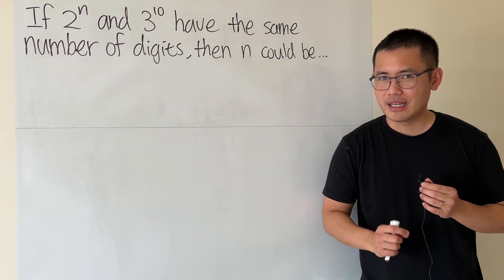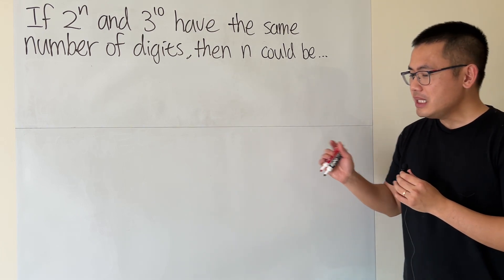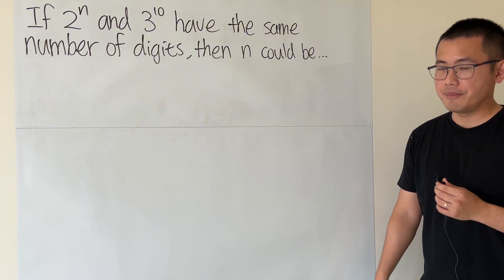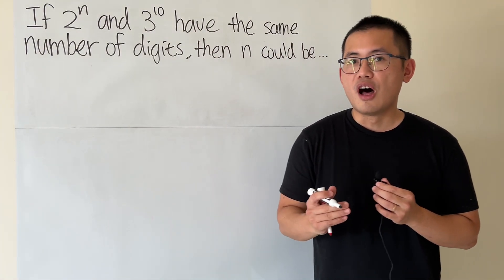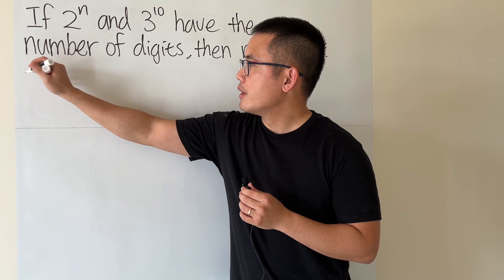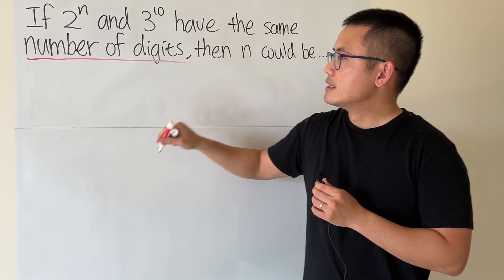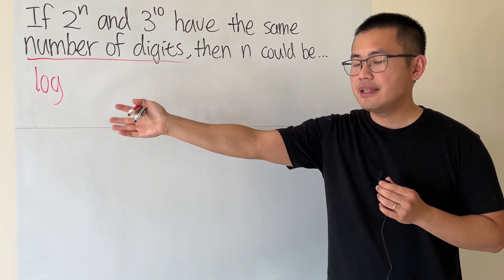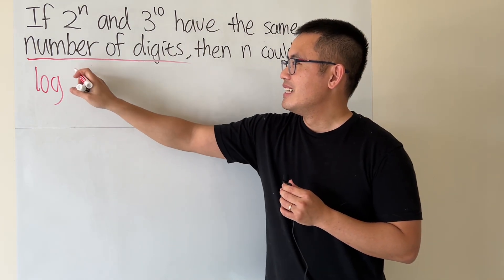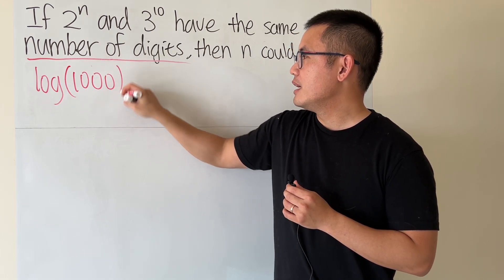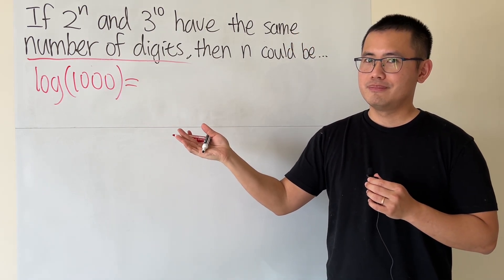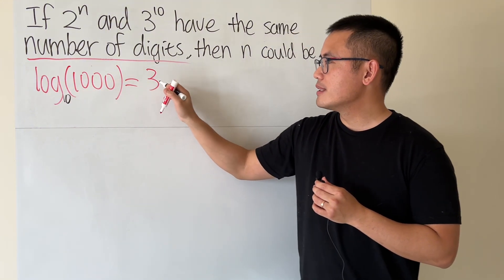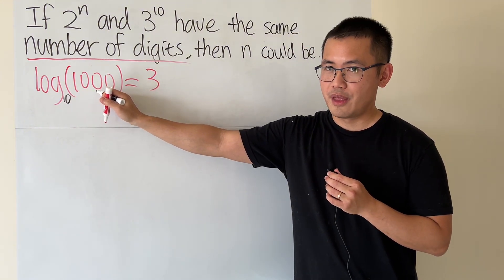That way is we can actually use logarithm to help us. So let me give you guys a quick review, and we'll make some observations first, and then we'll solve this question. The key right here is to use log base 10. So here is the deal. Suppose I have log base 10, but if it's base 10, you don't have to write down the 10.